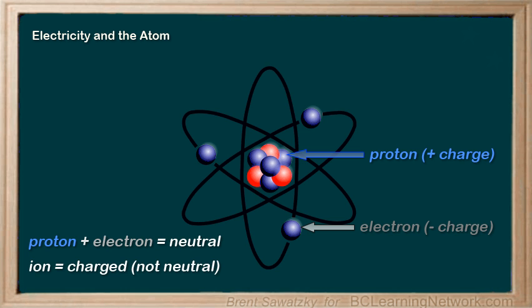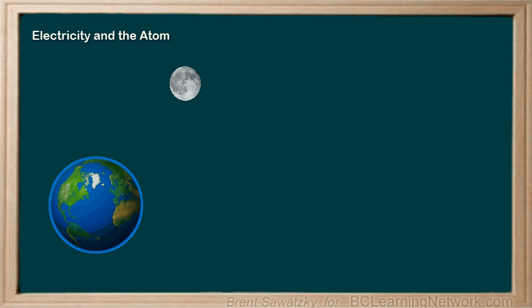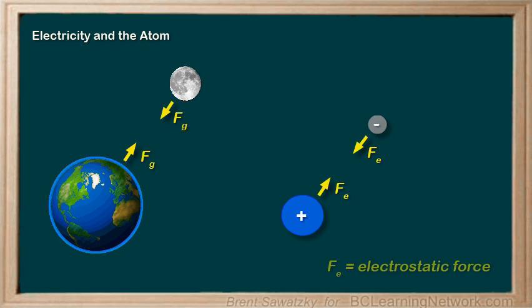Now the second big idea has to do with the forces between these charged particles. Just like the moon is attracted to the earth due to gravity, electrons are attracted to protons. Instead of gravity causing this force, the force is called an electrostatic force.